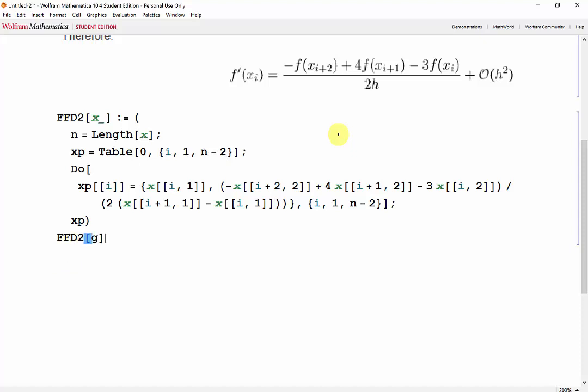Now testing that, using that same g vector that we had before, and plotting it against the true derivative, 1 plus 25 x squared, with respect to x, evaluated at x set to i, where i goes from negative 1 to 1. And then an epilogue, grabbing the points from the FFD2. Shift-Enter.